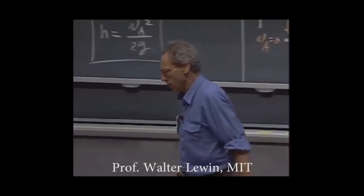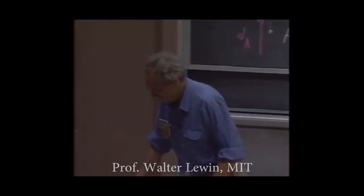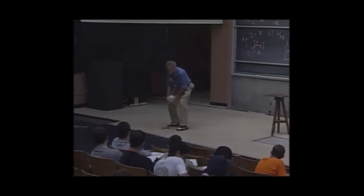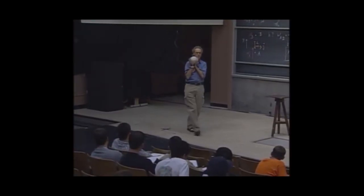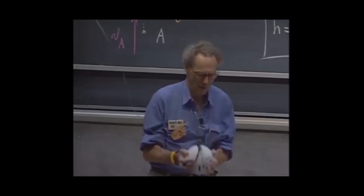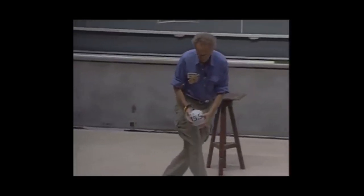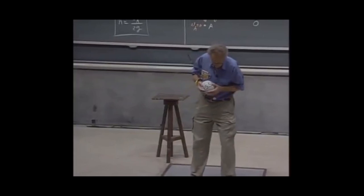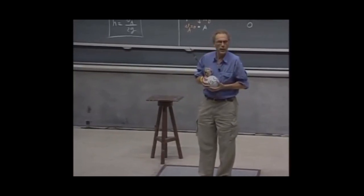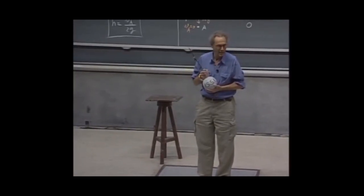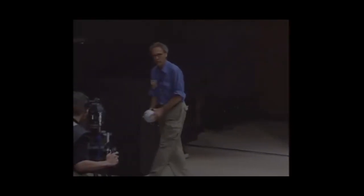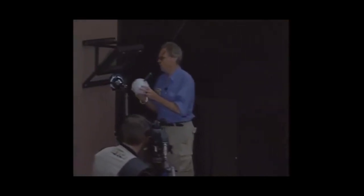I have here a pendulum. I have an object that weighs 15 kilograms, and I can lift it up one meter, which I have done now. If I would let it swing from one meter height and you would be there and it would hit you, you'd be dead. 150 joules is enough to kill you. You let it go, you swing it, thereby converting gravitational potential energy into kinetic energy, and that way you can demolish a building.